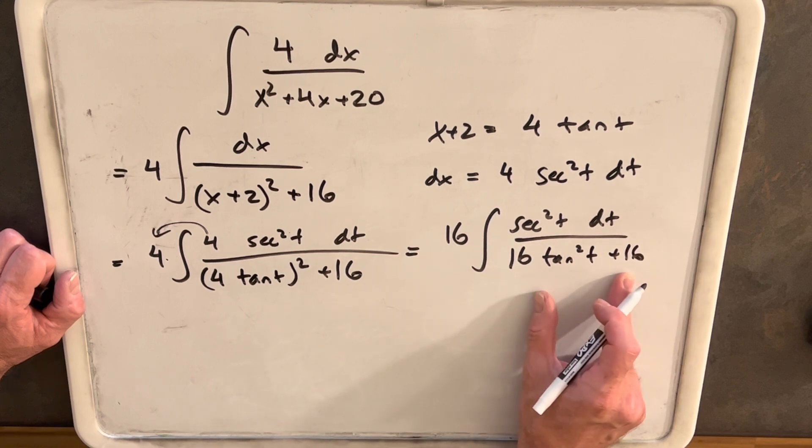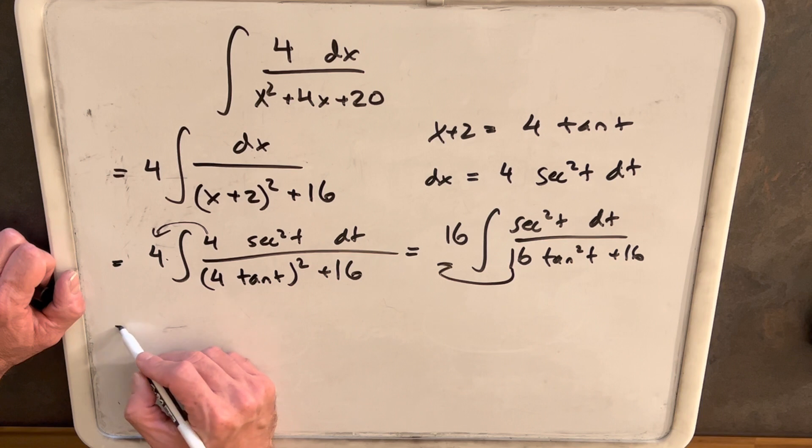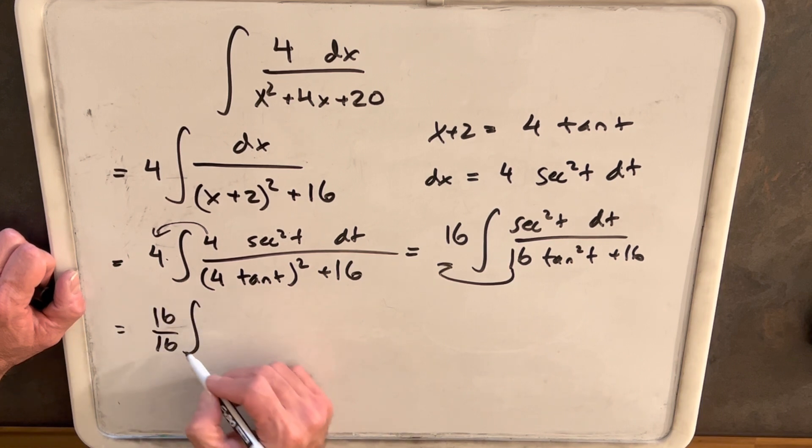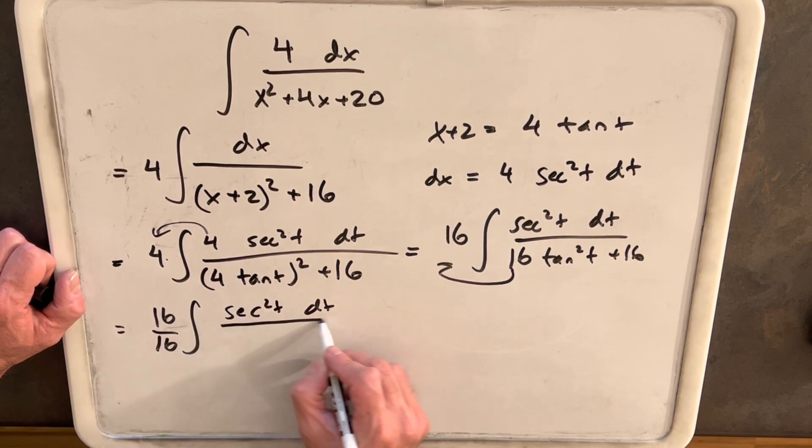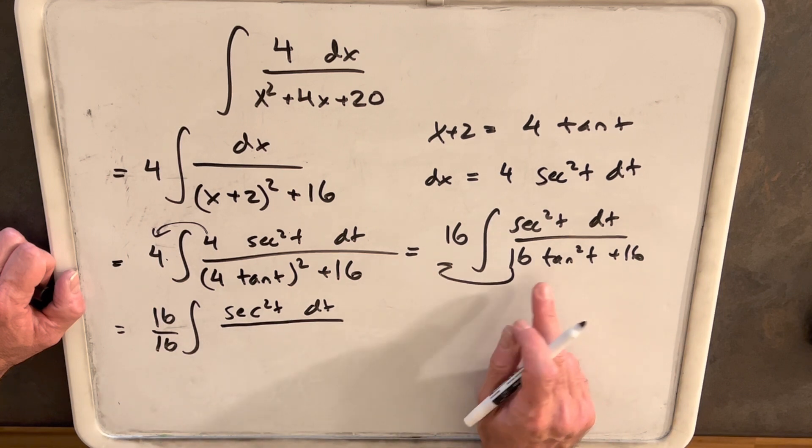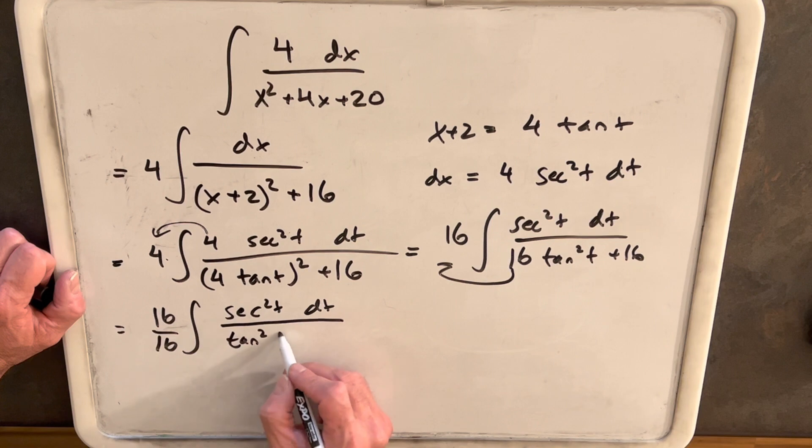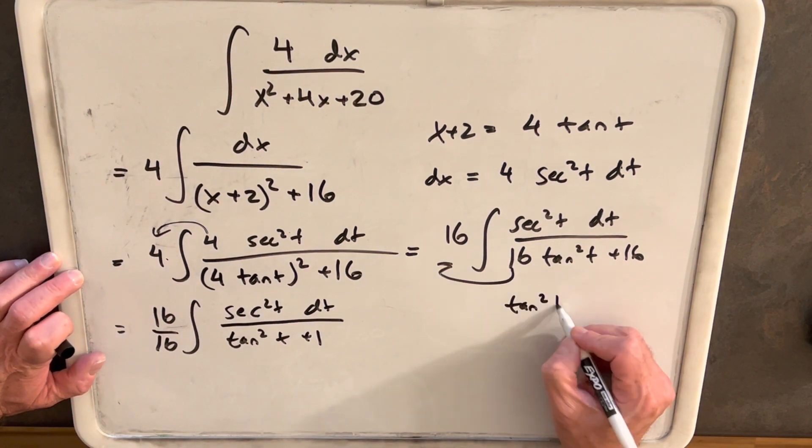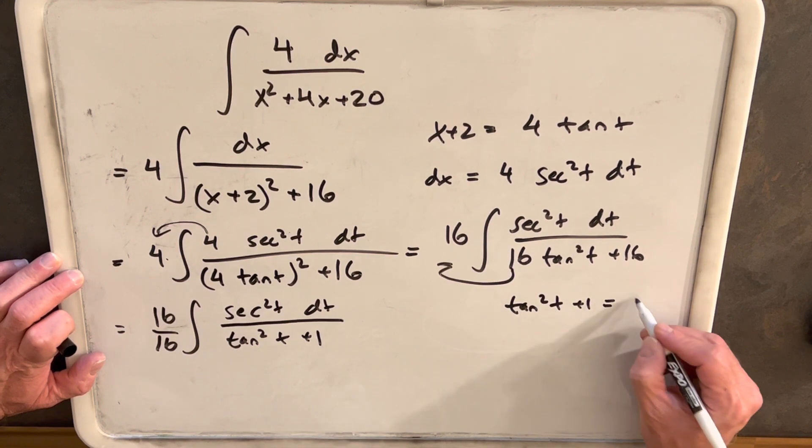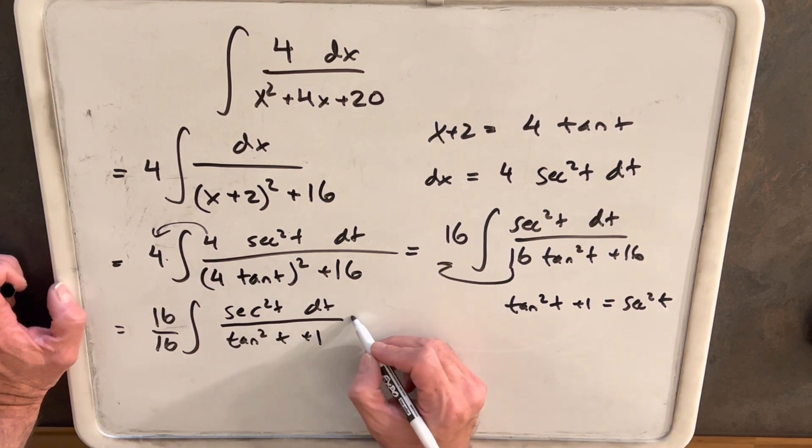Then we can factor out a 16 in the denominator. Bring that out, so we'll have 16 over 16, which of course is going to be 1. That's nice. We'll have secant squared t dt in the numerator. Then after we factor that 16, we're just going to have tan squared t plus 1. Now the key thing here is we have this identity that we know that tan squared of t plus 1 is just the same thing as secant squared of t.